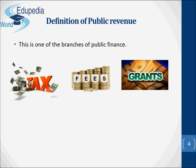Public revenue is one of the branches of public finance. It deals with the various sources from which the state might derive its income. These sources include incomes from taxes, commercial revenues in the form of prices of goods and services supplied by public enterprises, administrative revenues in the form of fees, funds, etc., and gifts and grants. The income of government through all sources is known as public revenue or public income.